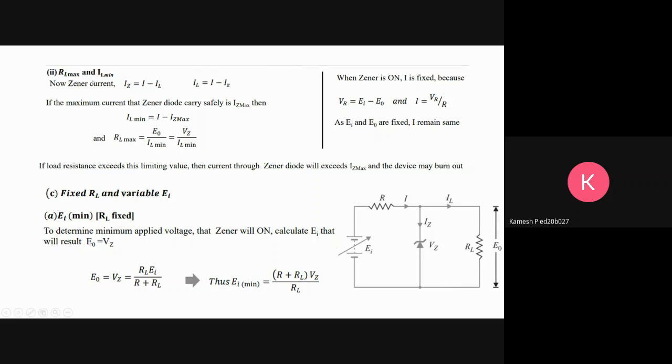Similarly, when RL maximum and RL minimum are given, and with fixed RL and variable input voltage, Ei minimum equals (R+RL)/RL times Vz.